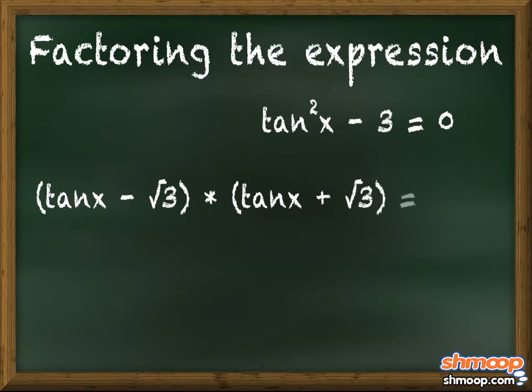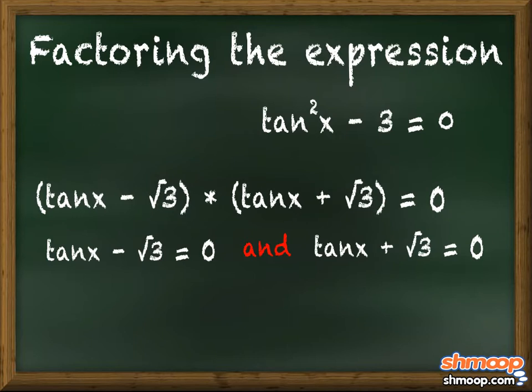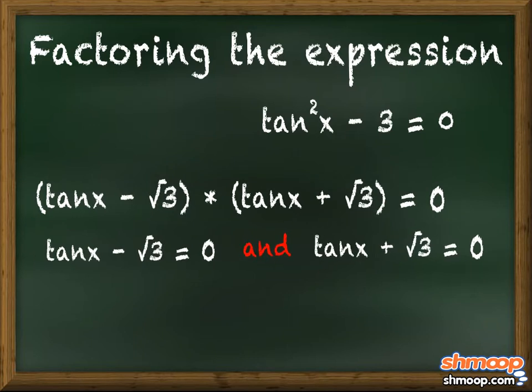In a bold move, he is now setting each of the quantities equal to zero. He knows that if their product together is zero, then one or both of them must be equal to zero.